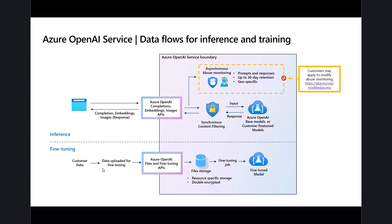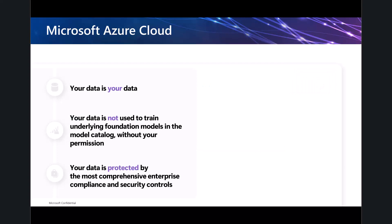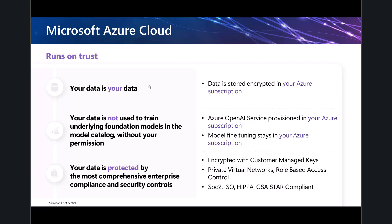On fine-tuning, the same idea applies — data is brought in and processed within Azure OpenAI, so everything will be secured for you. When we add RAG content, any documents or other information, everything else applies with an extra step of finding and adding relevant information. On Microsoft Azure cloud, your data is your data — we will not use it to train our underlying foundation models, and it is all protected by comprehensive enterprise compliance and security controls.